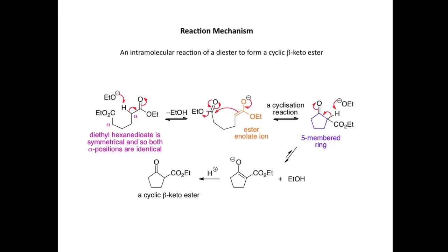Let's have a look at an example of this reaction. We're going to start with diethylhexanedioate, which is this compound here. It's a symmetrical system, so we can have two different alpha positions — here and here — which are adjacent to the carbonyls. These positions are identical, so this alpha position is identical to this one here.